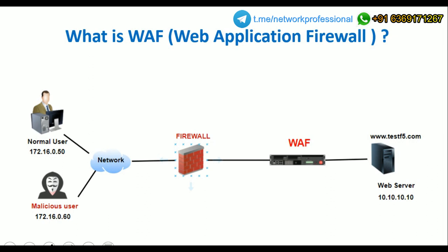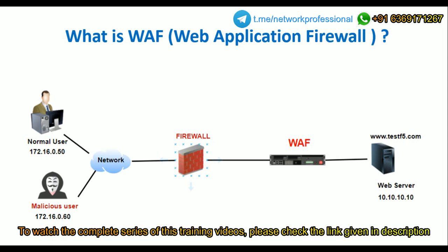Since hackers operate at the top layer — Layer 7 — and not at Layer 3 or Layer 4, they can easily pass through the traditional firewall and compromise the server. This is the limitation of a traditional firewall, and this is where WAF comes in. WAF is a device or appliance placed between the firewall and the web application server — or in other words, the web application server is placed behind the WAF.